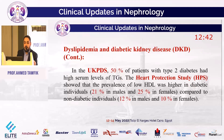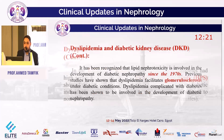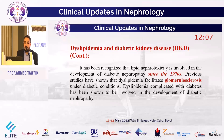In UKPDS, 50% of patients with type 2 diabetes had high serum triglycerides. The Heart Protection Study showed the prevalence of low HDL was higher in diabetic individuals — 21% in males and 25% in females — compared to non-diabetic individuals at 12% in males and 10% in females. It has been recognized that lipid nephrotoxicity is involved in the development of diabetic fibrosis since the 1970s. Previous studies have shown that dyslipidemia facilitates glomerulosclerosis under diabetic conditions.